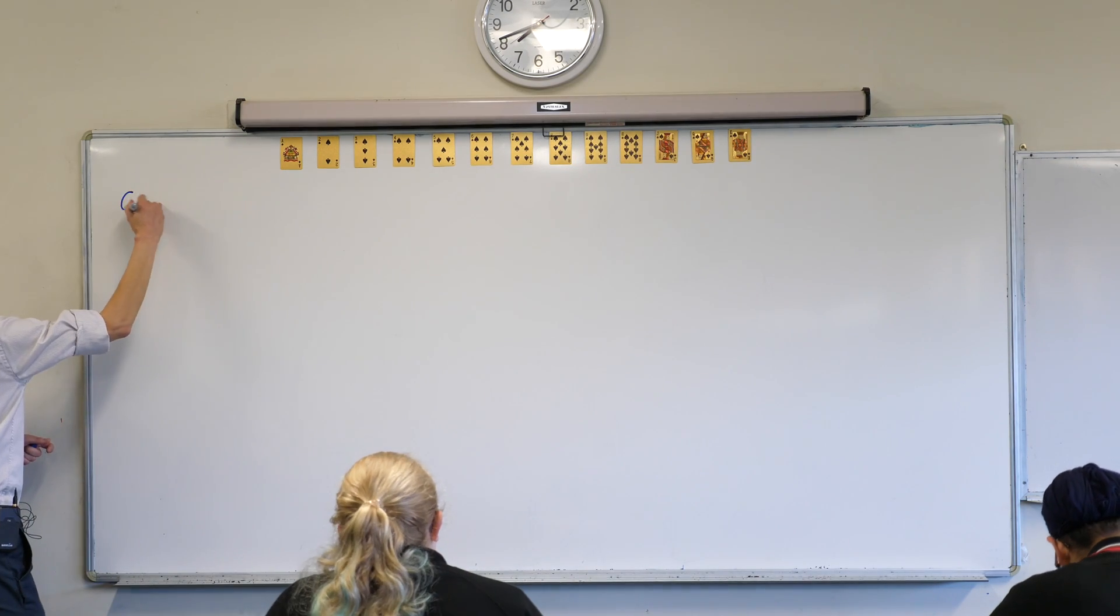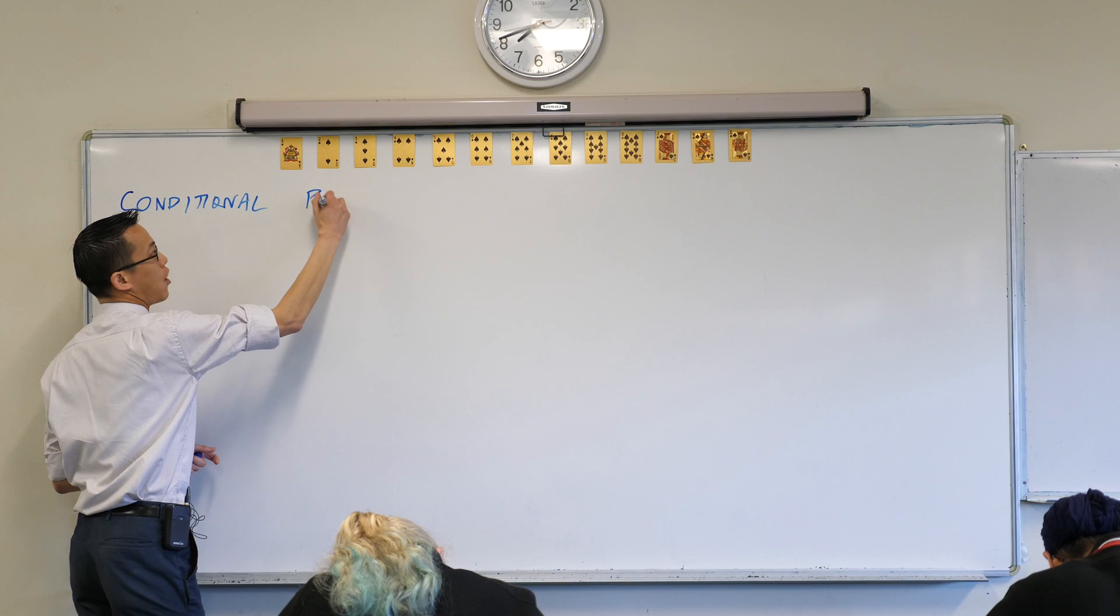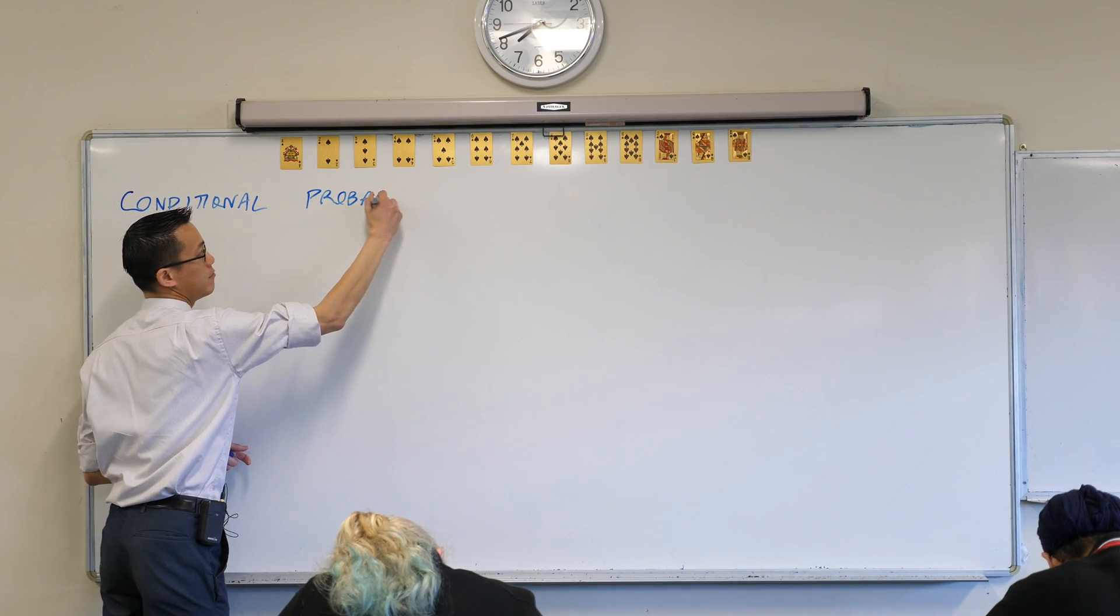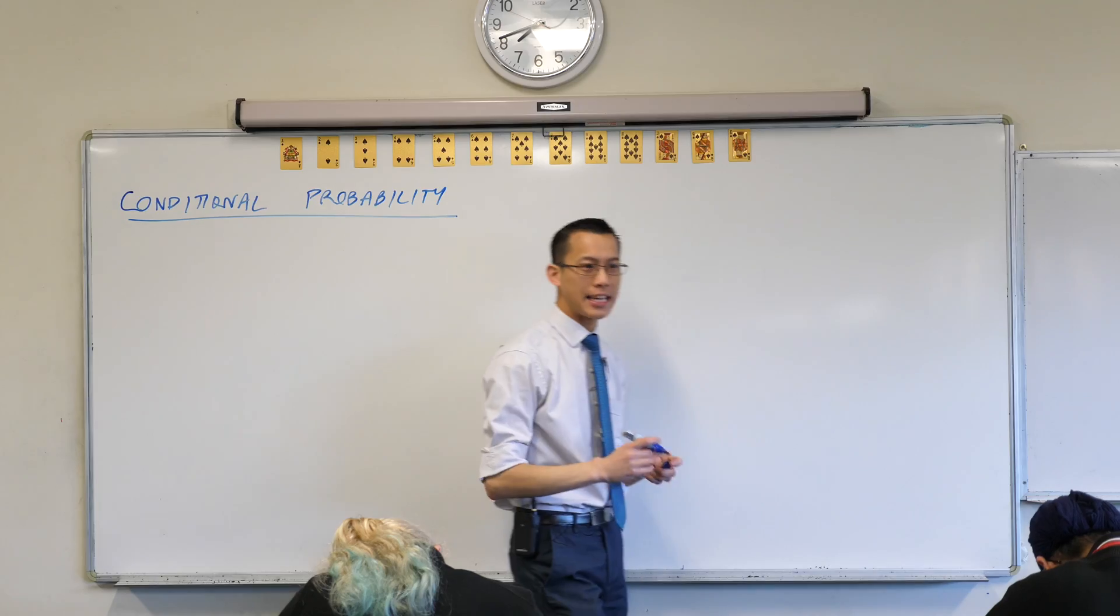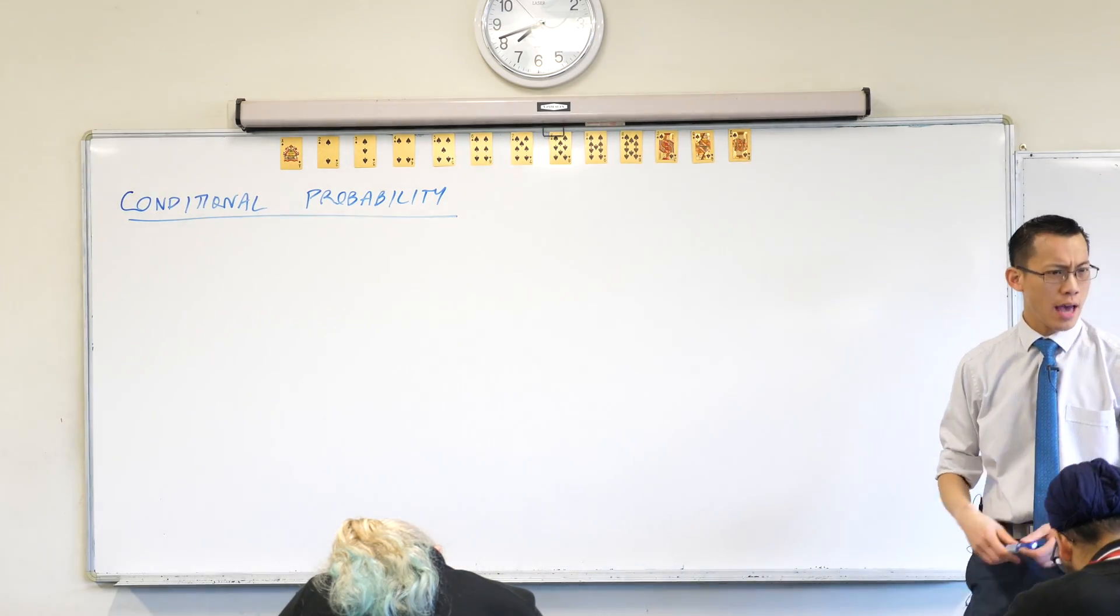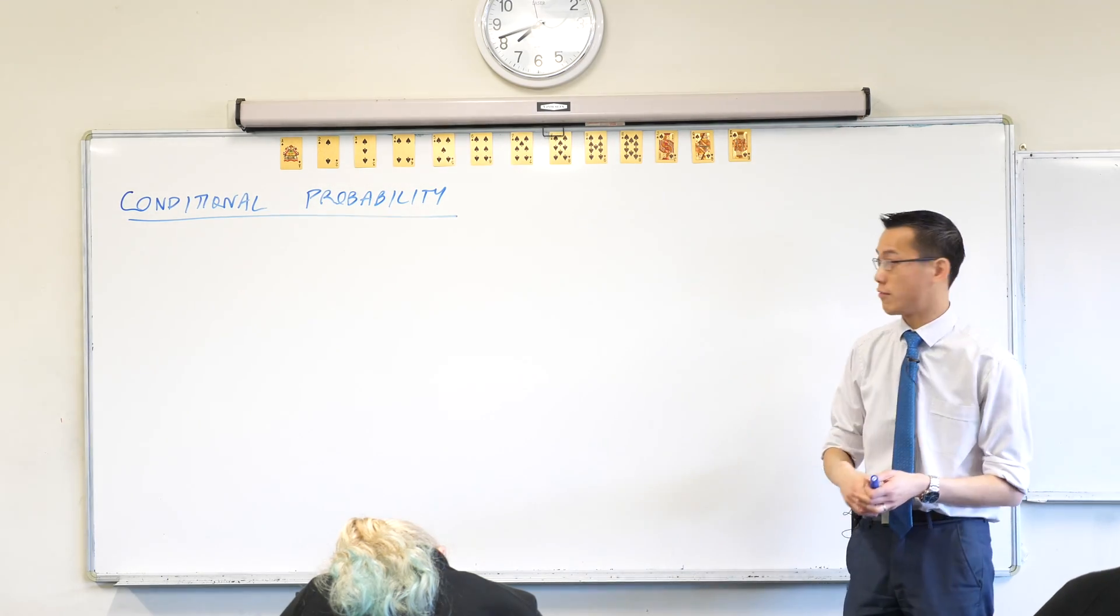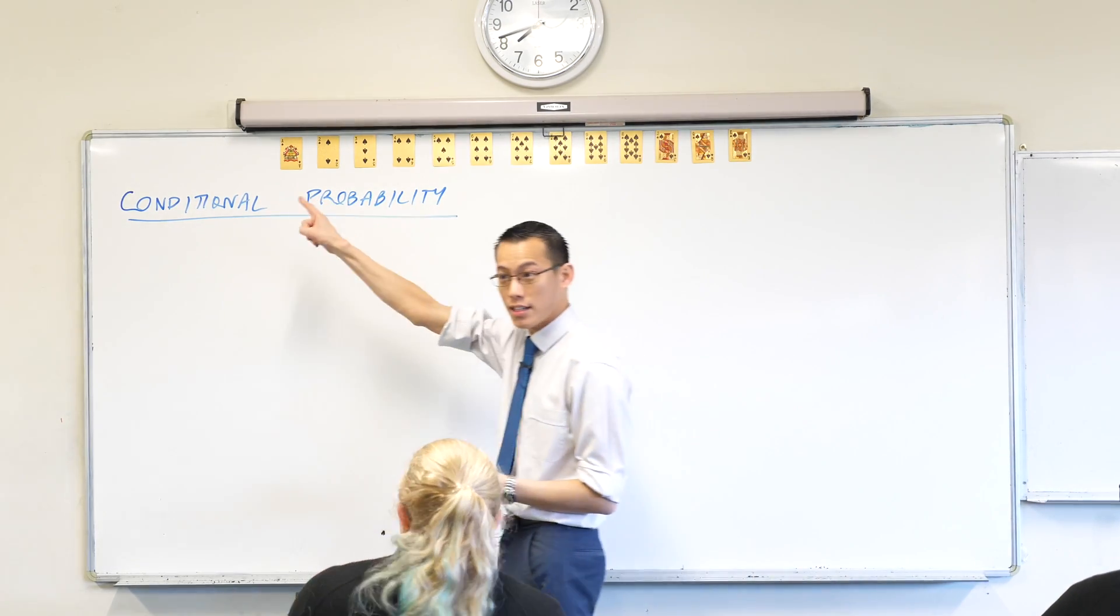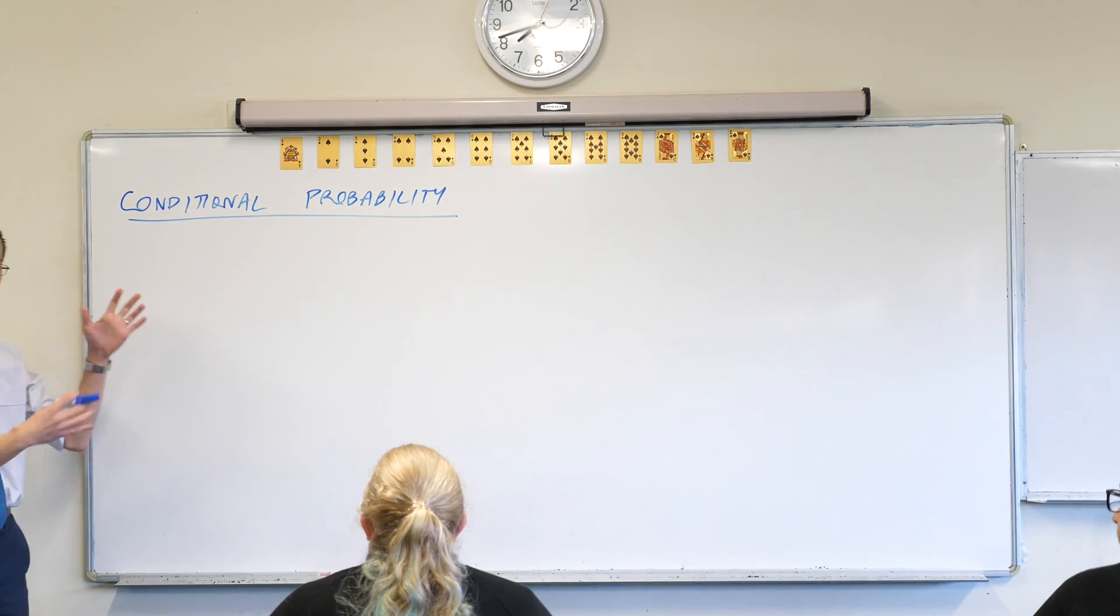Conditional probability, this idea of thinking about the chance of something, the probability when you have some given conditions like this is the accuracy of the test and this is how many people are likely to have the disease in the population. These are all conditions which affect the probability of something.